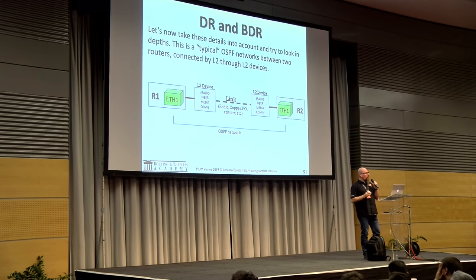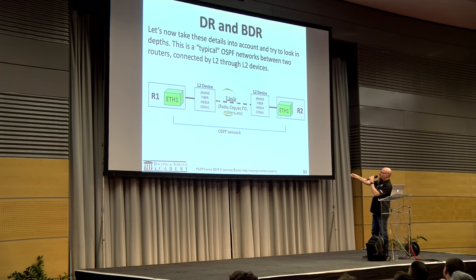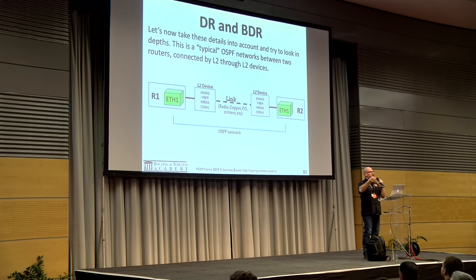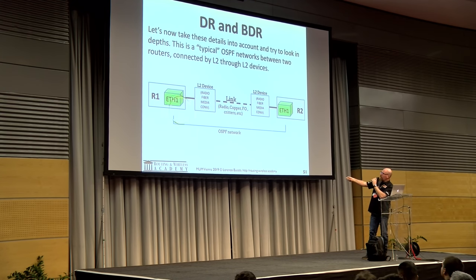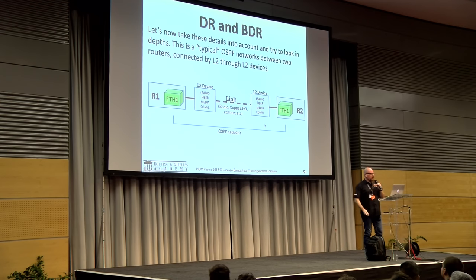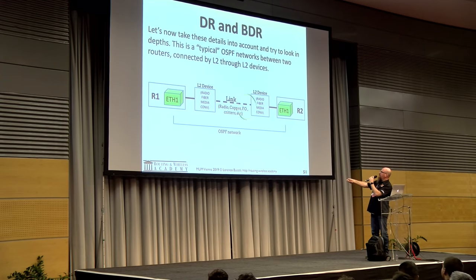Now consider a very common real-life OSPF scenario. You have a link between two sites — radio, copper, fiber — and you're using a layer 2 device like a high-capacity radio bridge to connect them. You have a router on each side running OSPF, connected via an Ethernet interface. Using the default broadcast network type, the network will elect one DR and one BDR.